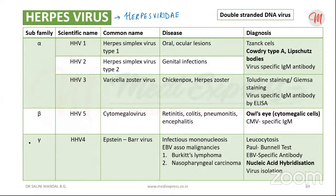Morphologically, the herpesvirus has a diameter of around 100 to 200 nanometers. Importantly, regarding the genome, it is a double-stranded DNA virus — any kind of herpesvirus will have a double-stranded DNA genome. Very important.